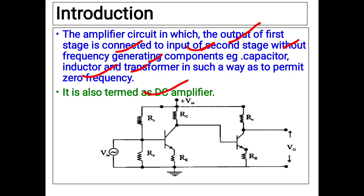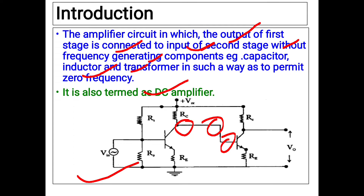The circuit diagram for the direct coupled amplifier is given here. You can see that the output from the collector terminal is directly connected to the input terminal of the second transistor without using any coupling device. This type of amplifier circuit is known as the direct coupled amplifier circuit.